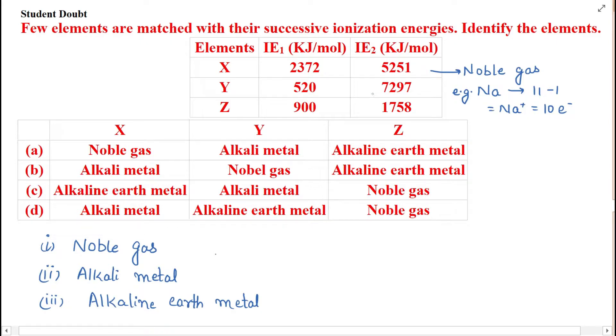So I can say that Y may be alkali metal. Third is quite obvious that first is noble, second is alkali and the last one may be alkaline earth metal. So option A is the correct option.